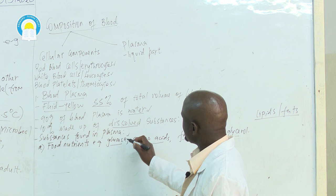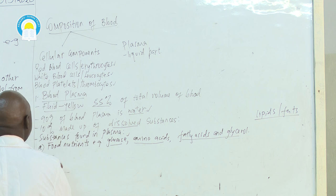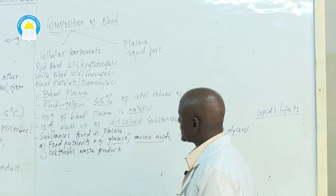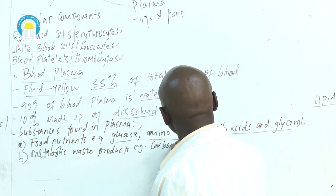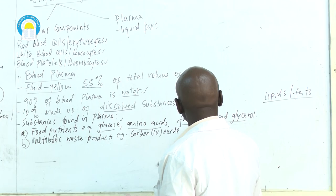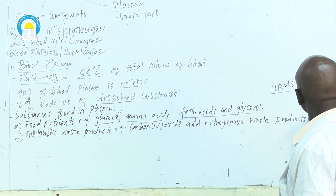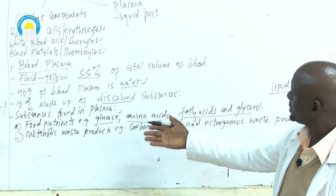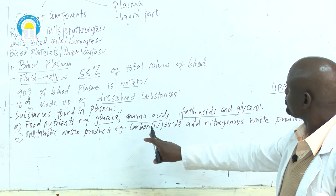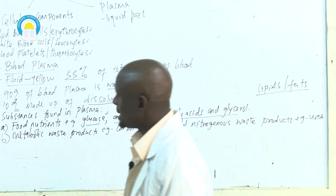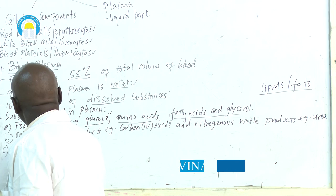The second category of substances in plasma is metabolic waste products — for example, carbon dioxide and nitrogenous waste products such as urea. These must be taken from the body tissues and eliminated through the appropriate organs: carbon dioxide is excreted in the lungs, while most urea is excreted through the kidneys.